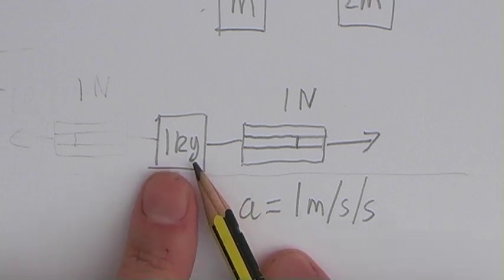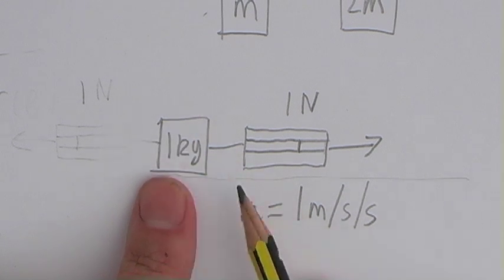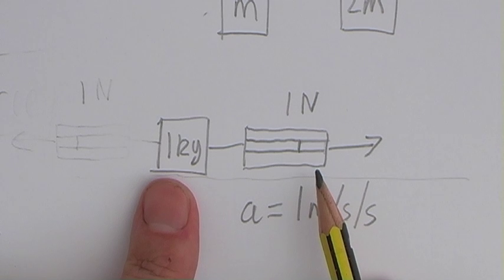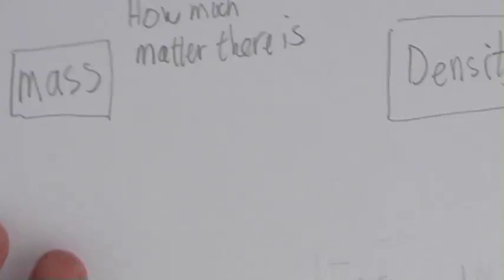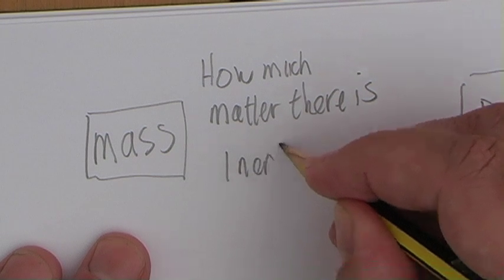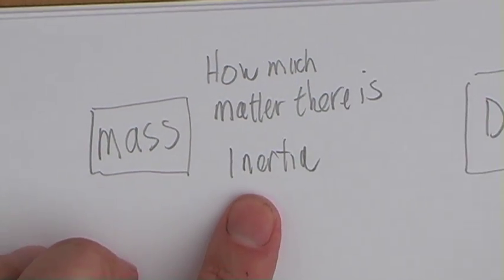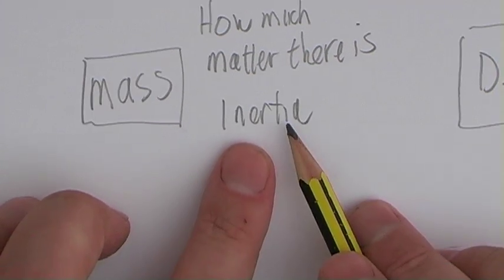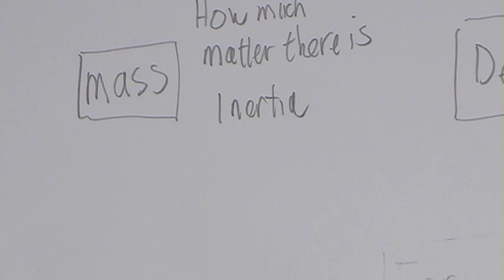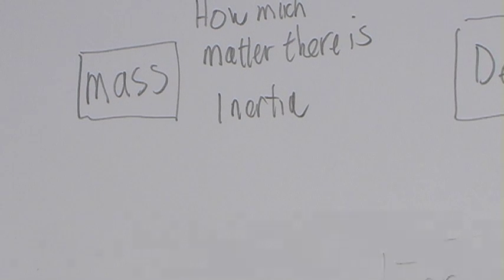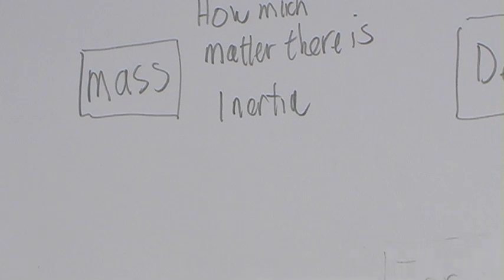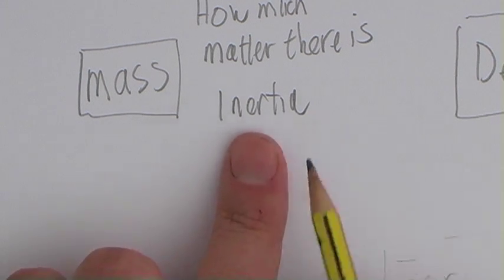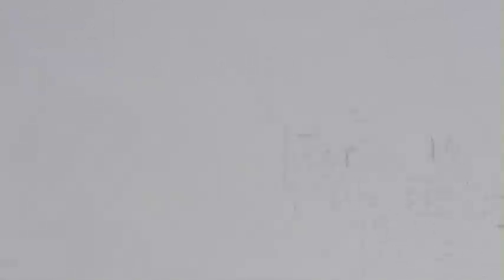So acceleration is proportional to the force acting on it and it's inversely proportional to the mass, which means if you double the mass you halve the acceleration. So mass is also a measure of something else — it's not just a measure of how much you have of something. It's also a measure of how reluctant something is to be accelerated or to have its motion changed. This concept is called inertia — the reluctance of something to either be made to speed up, slow down, or to have the direction it's moving in changed.